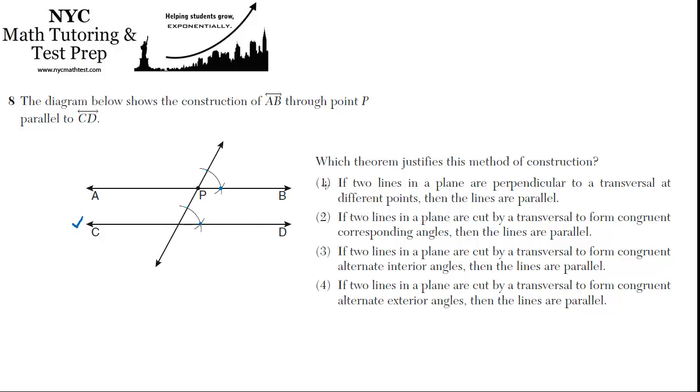Okay, now let's take a look at the answer choices. One, if two lines in a plane are perpendicular. Are these lines perpendicular? This transversal, it might be perpendicular, but it certainly doesn't look it. This looks acute. This looks obtuse. Same down here. So it's not number one.